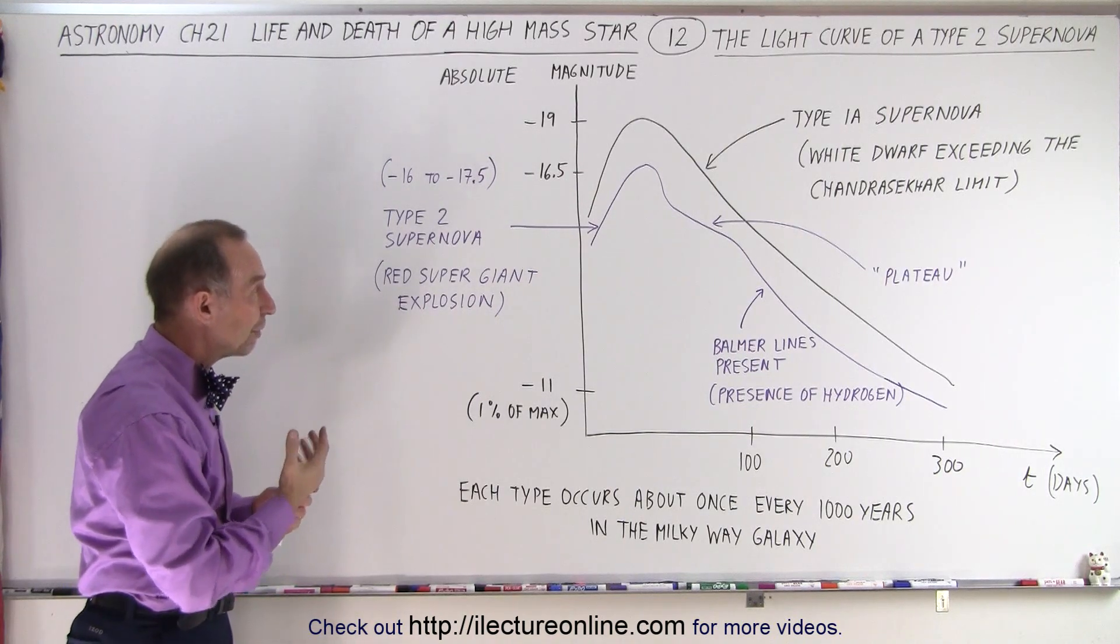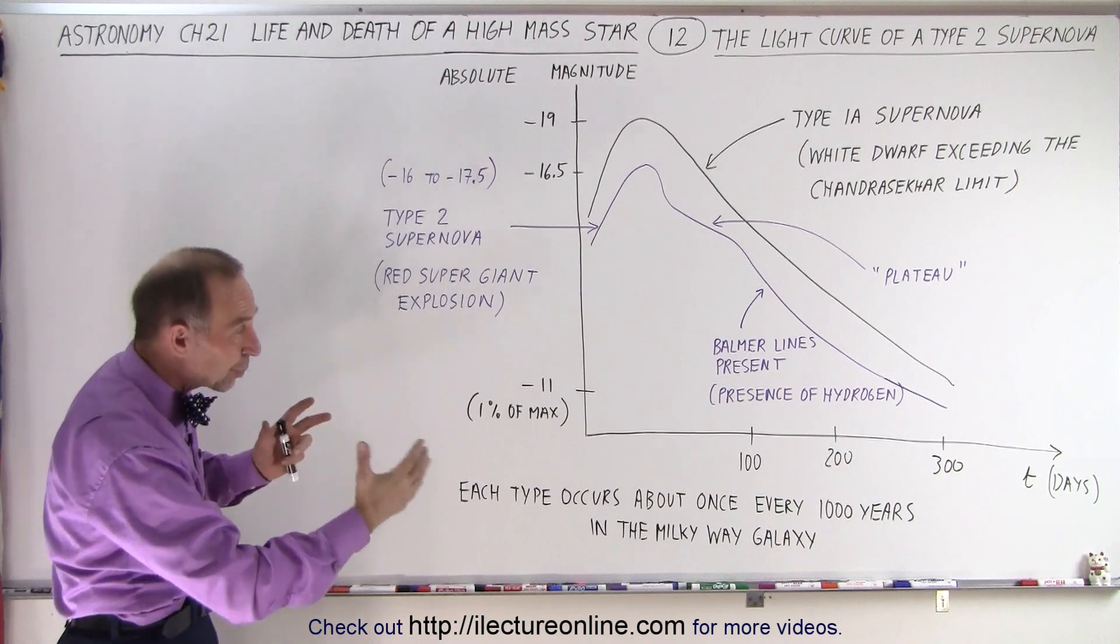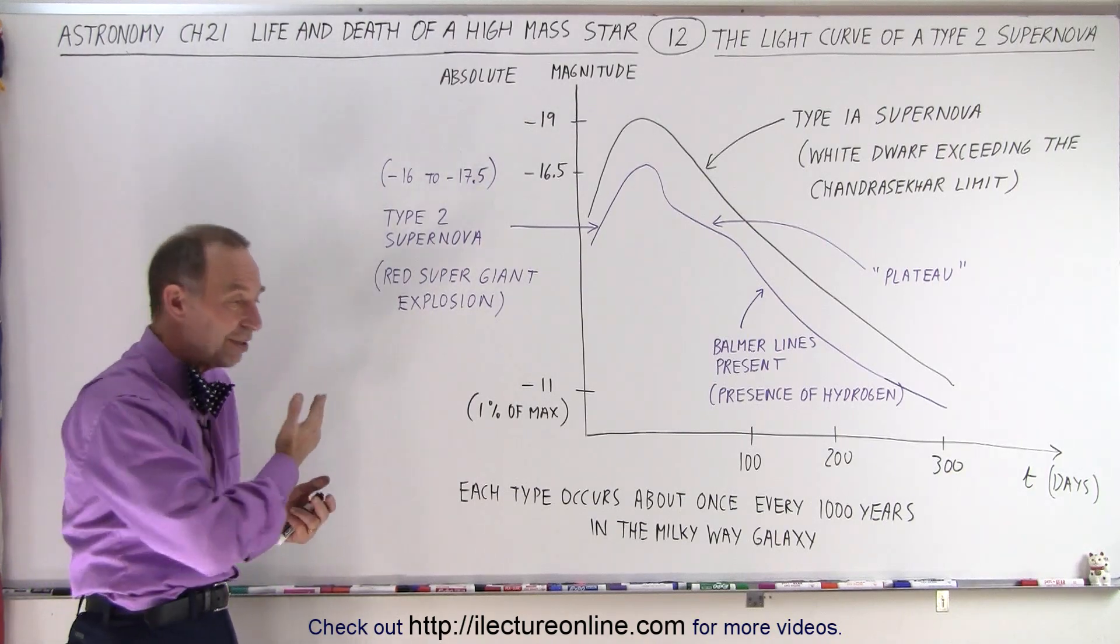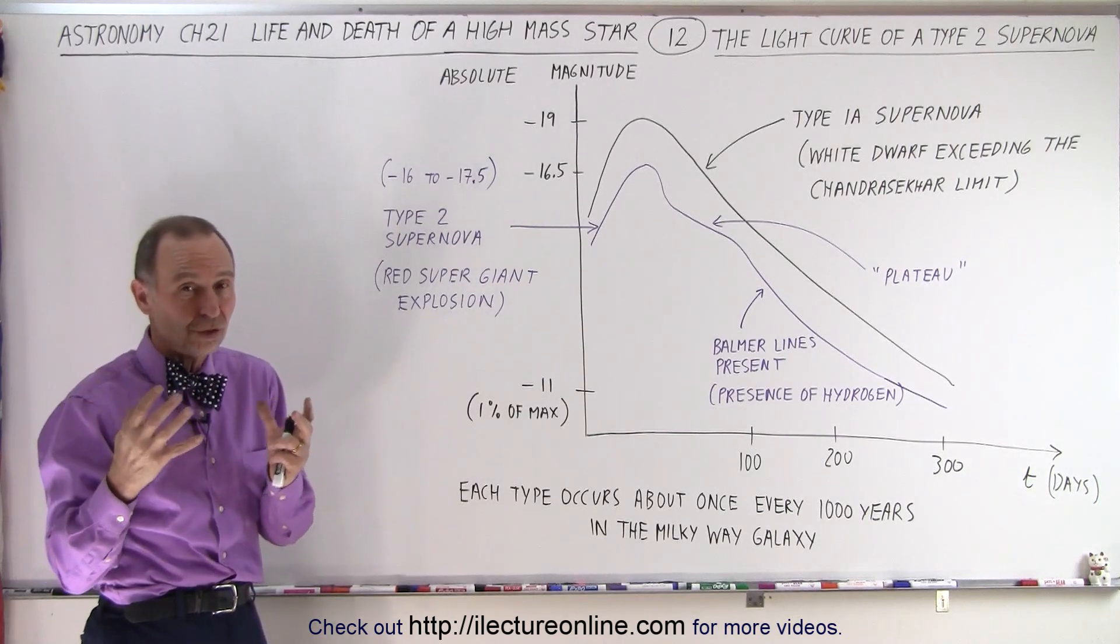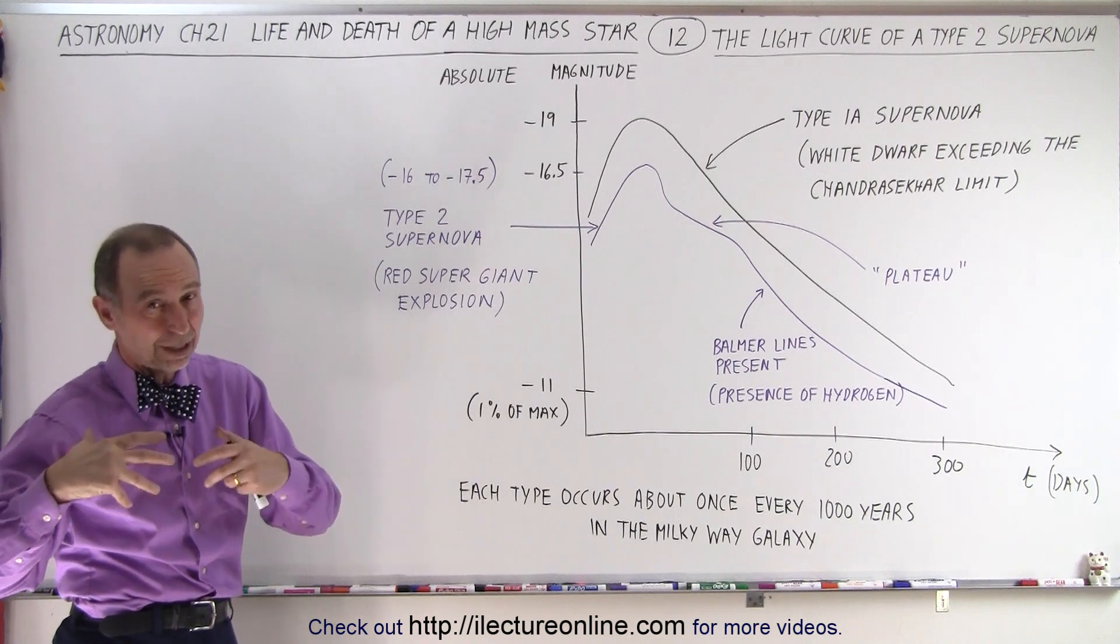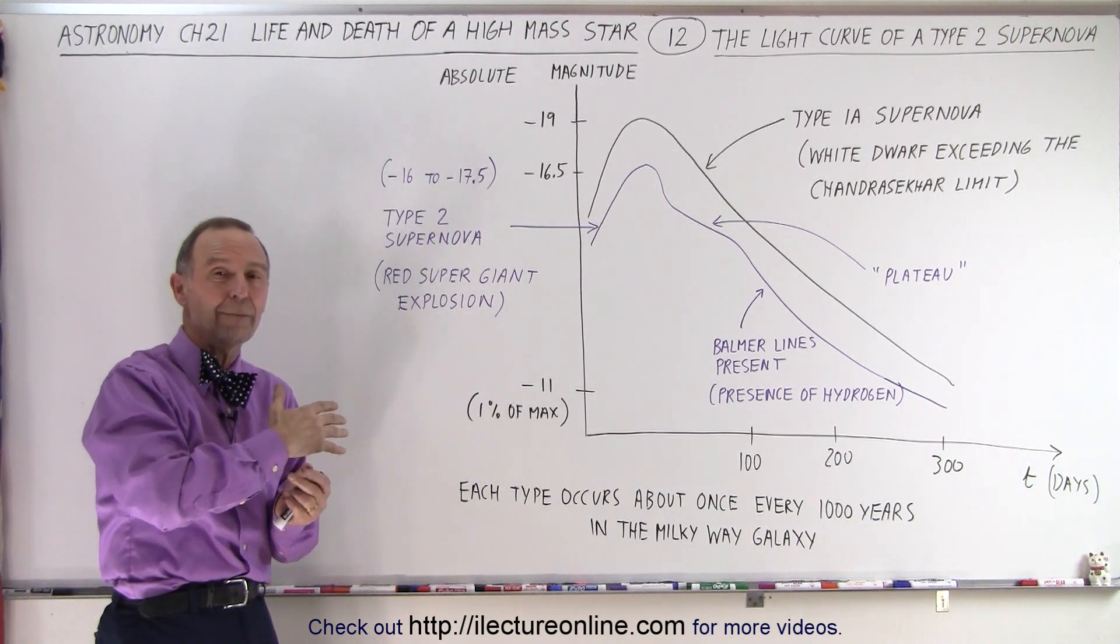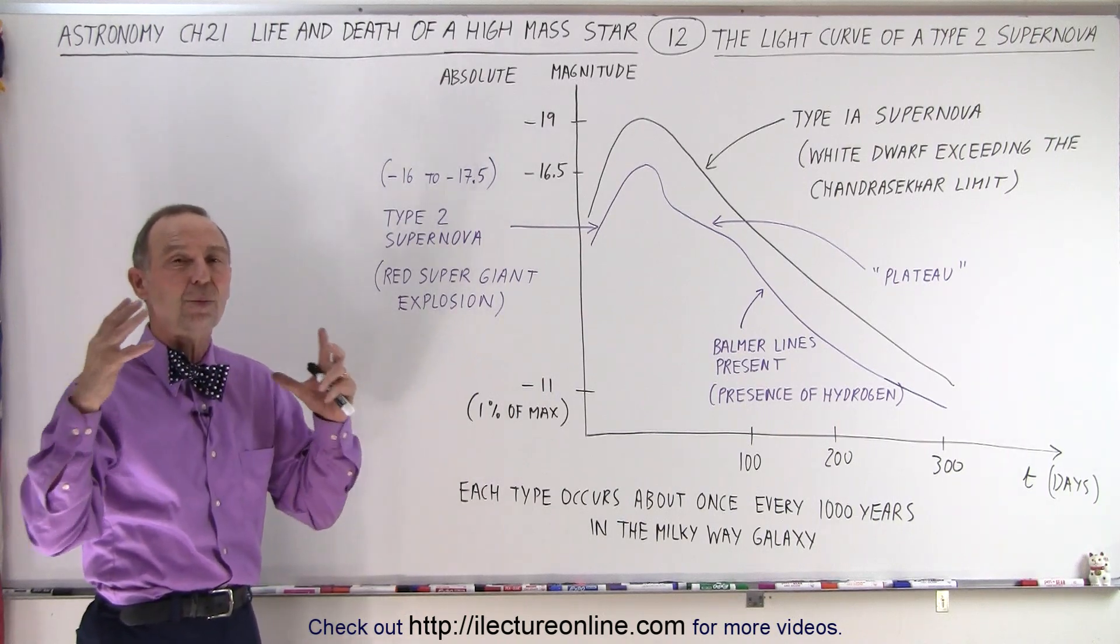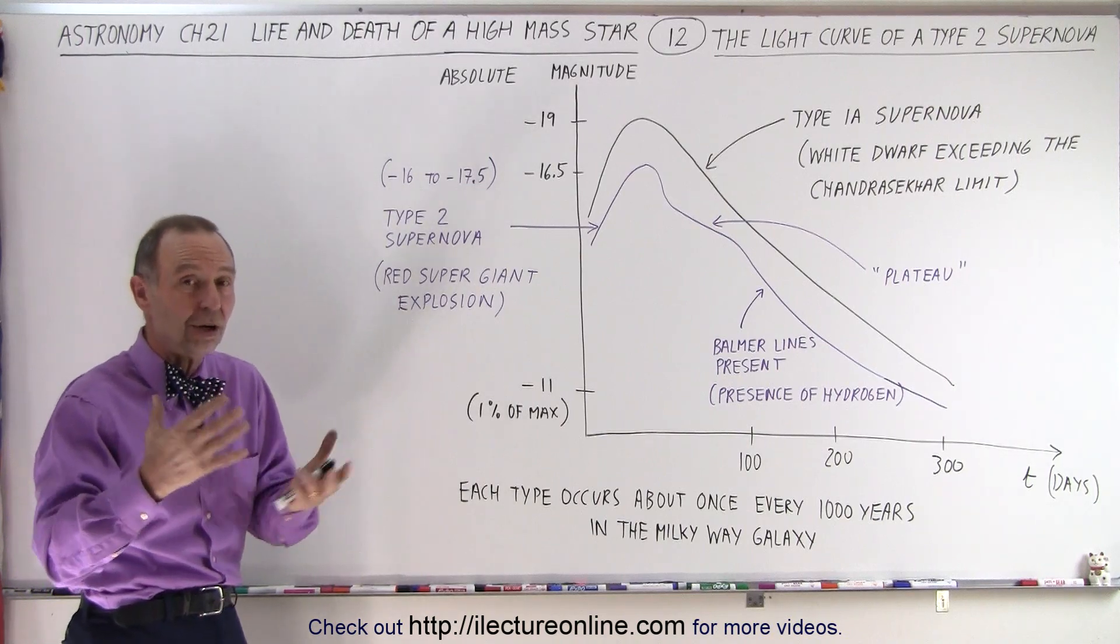Well with the Type 2 supernova we have what we call a light curve. Over time, about 300 days or so, we see first of all a rapid brightening of the star. The star becomes so bright that it almost outshines the rest of the galaxy. Not quite, but it's quite impressive sight where the brightness of the star increases by many thousands of times the original brightness as a red giant. And of course as a red giant, it already is a very bright star.